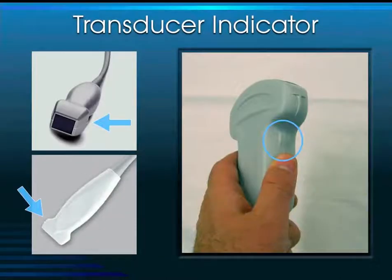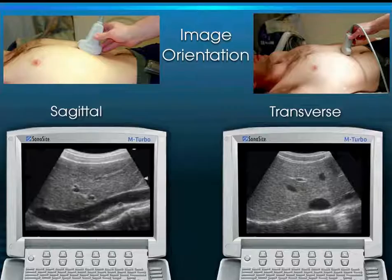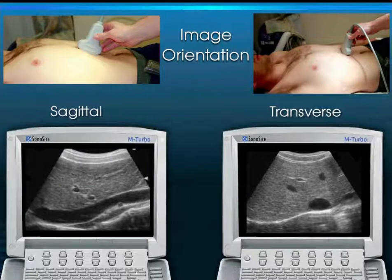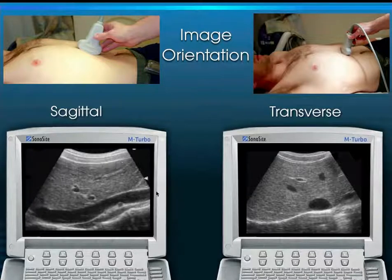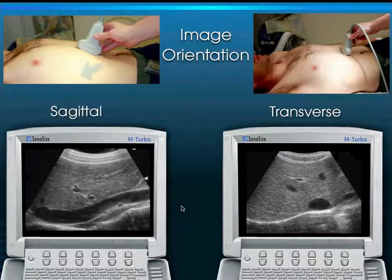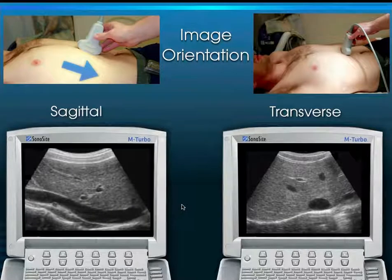Each transducer has an indicator on it. The indicator has a standard: in this country, it points towards the patient's head in a sagittal view, and towards the patient's right in a transverse view. Looking at this inferior vena cava in sagittal view, the head side is on the left of screen and feet on the right. If you accidentally aim the indicator down towards the feet, the IVC appears upside down.